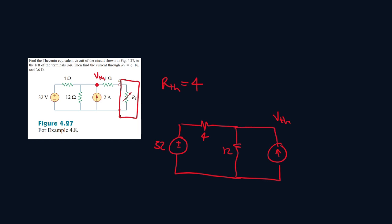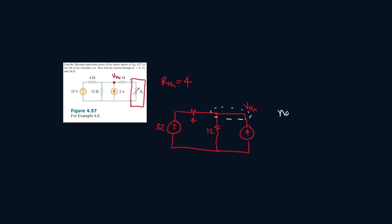Hold on. So for this whole node, let's call it node VTH. Let's write directions of current. Let's call it I1, I2, ground node.